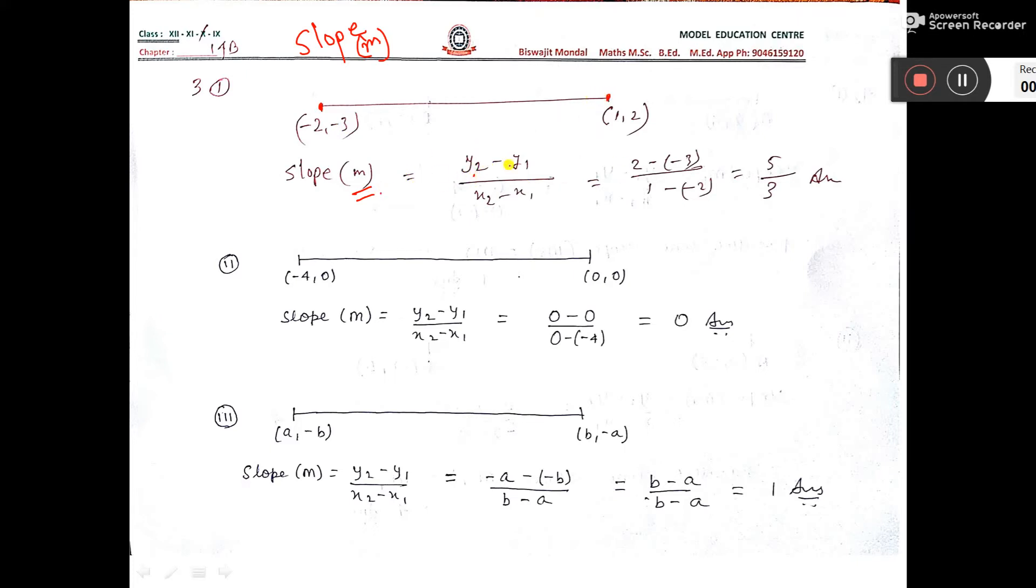Our slope formula is y2 minus y1 by x2 minus x1. This is x1, y1 you consider. This is x2, y2 you consider.